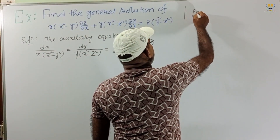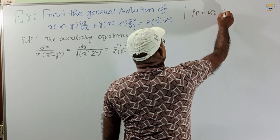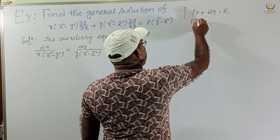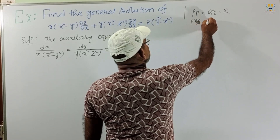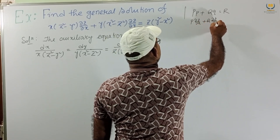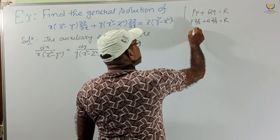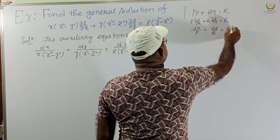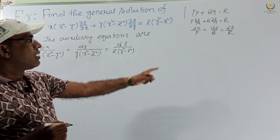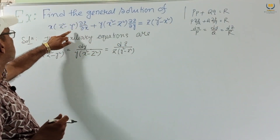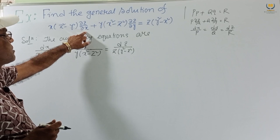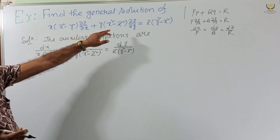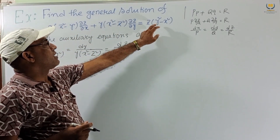We write the auxiliary equations because if we have Pp + Qq = R, or equivalently p·∂z/∂x + q·∂z/∂y = R, then the auxiliary equation is dx/P = dy/Q = dz/R. Here P is x(z²-y²), Q is y(x²-z²), and R is z(y²-x²).